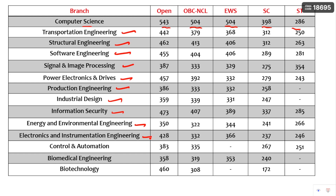Electronics and Instrumentation Engineering, Control and Automation, Biomedical Engineering, Biotechnology — all these branches are given. Based on branch and category wise, I have mentioned clearly: Open, OBC Non-Creamy Layer, EWS, HC, HD — each and everything is given in the table. You can pause the video and go through the cutoffs available for each course.